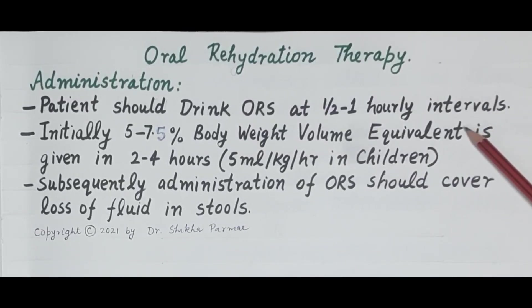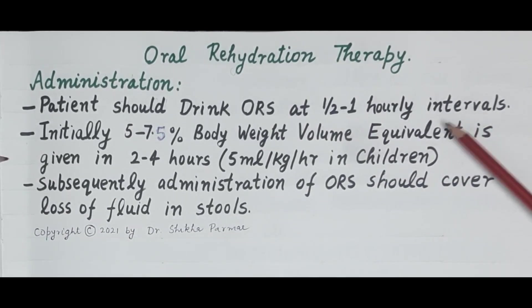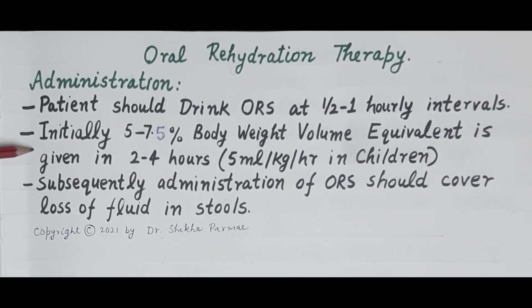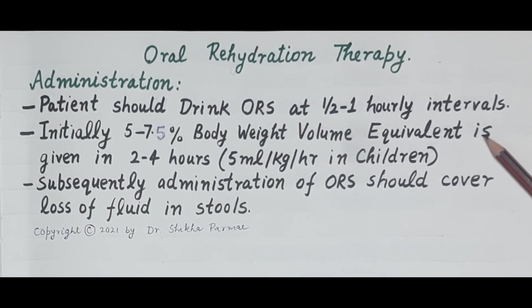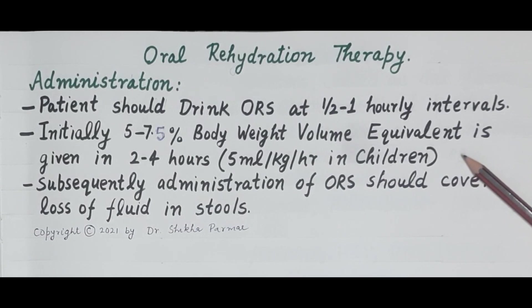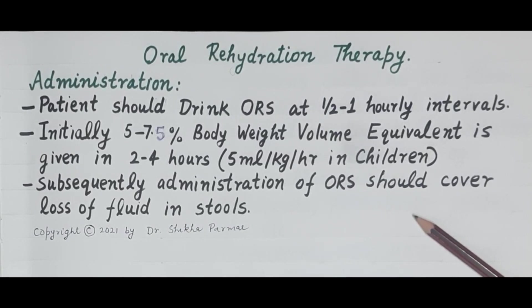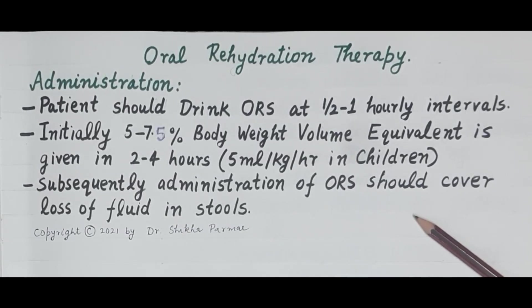Regarding administration of oral rehydration solution: a patient should drink ORS at half to one hourly intervals. If fluid loss is mild — that is 5 to 7.5% of body weight — then initially a volume equivalent to 5 to 7.5% of body weight of ORS is given over 2 to 4 hours. In children, ORS is given at a rate of 5 ml per kilogram per hour. Subsequently, administration of ORS depends on requirement and should cover the loss of fluids in the stools.